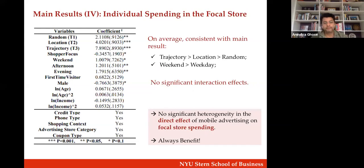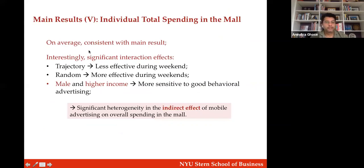For overall mall spending, trajectory is most effective during weekdays while random is more effective during weekends. There are demographic effects: males and higher-income people tend to be more responsive to trajectory-based targeting techniques. There is some heterogeneity in the indirect effect of mobile advertising on overall mall spending.